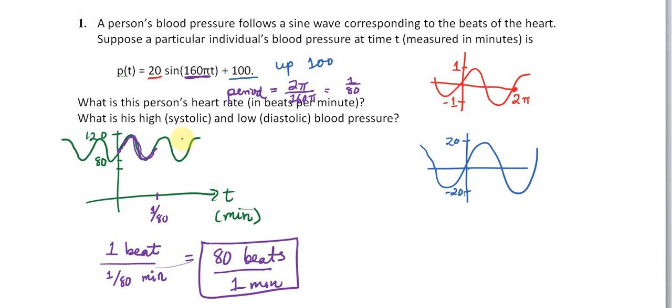Now the second question, what is his systolic or the high blood pressure, and what is the diastolic? Well, we have it by using the graph here. His high is at 120 and his low is at 80.